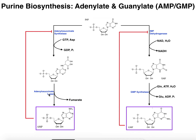It pretty much does the same type of reaction. Once we attach an aspartate onto something, it cleaves at least the carbon region off as fumarate, which will then go into the TCA cycle or Krebs cycle. And that's going to leave us with the adenyl nitrogenous base, and the whole nucleotide is just adenylate, or AMP, adenosine monophosphate. And that's how we get AMP.